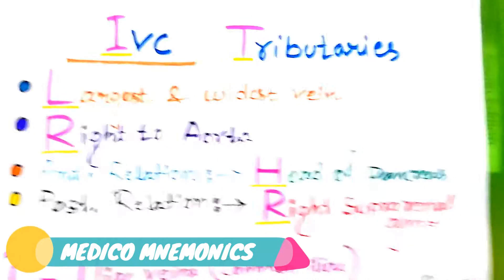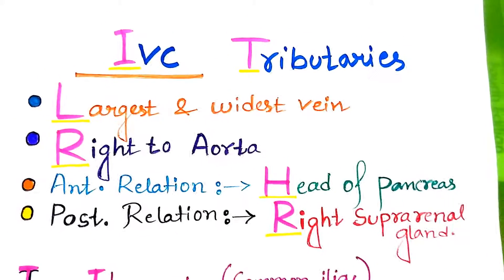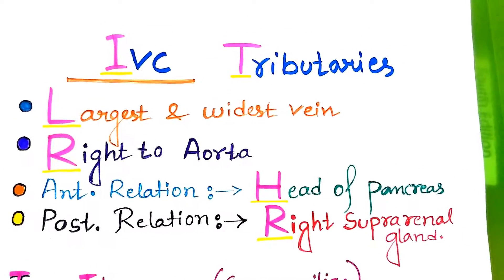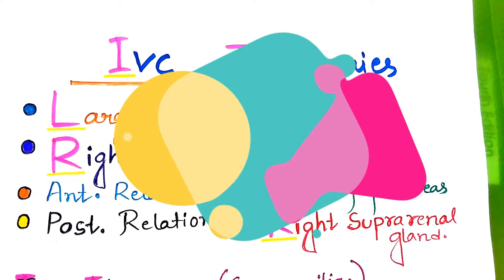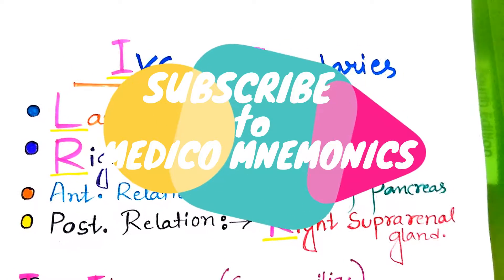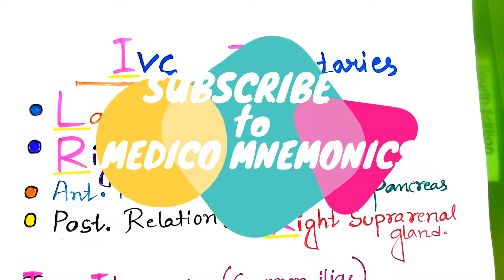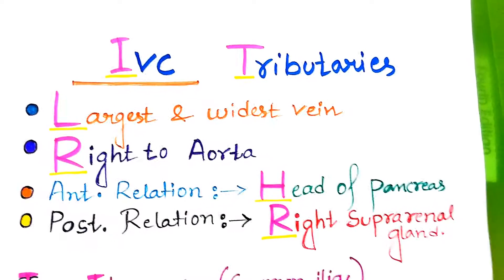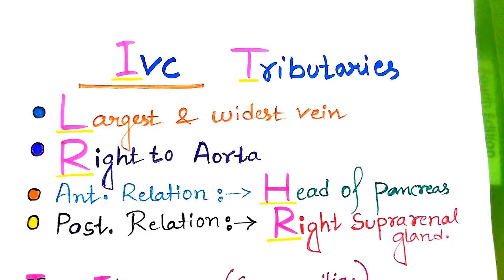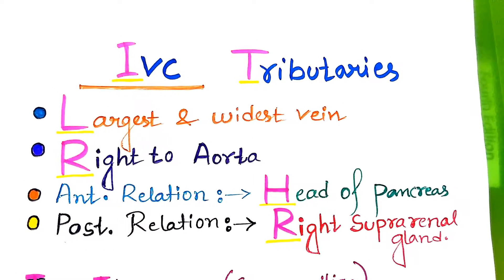Welcome back friends, today's topic for mnemonic is IVC tributaries, that is inferior vena cava tributaries. Please subscribe to medical mnemonics if you haven't already done so. Here we don't have to remember fantasy things or other bizarre things, we just have to know the features of inferior vena cava.